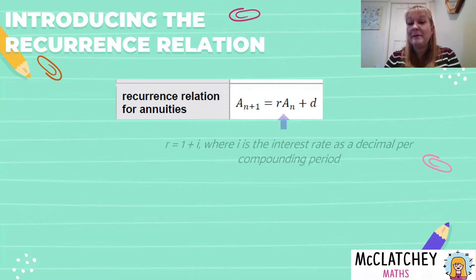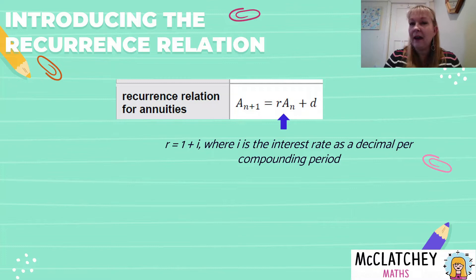So let's talk about what these terms mean. First, we've got this letter R. Well, you may not have seen R before. We've seen the letter I when we've been talking about annuities. However, R is something a little bit different. It's taking the interest rate as a decimal per compounding period, which we're familiar with. That's what I is. And we add one to it.